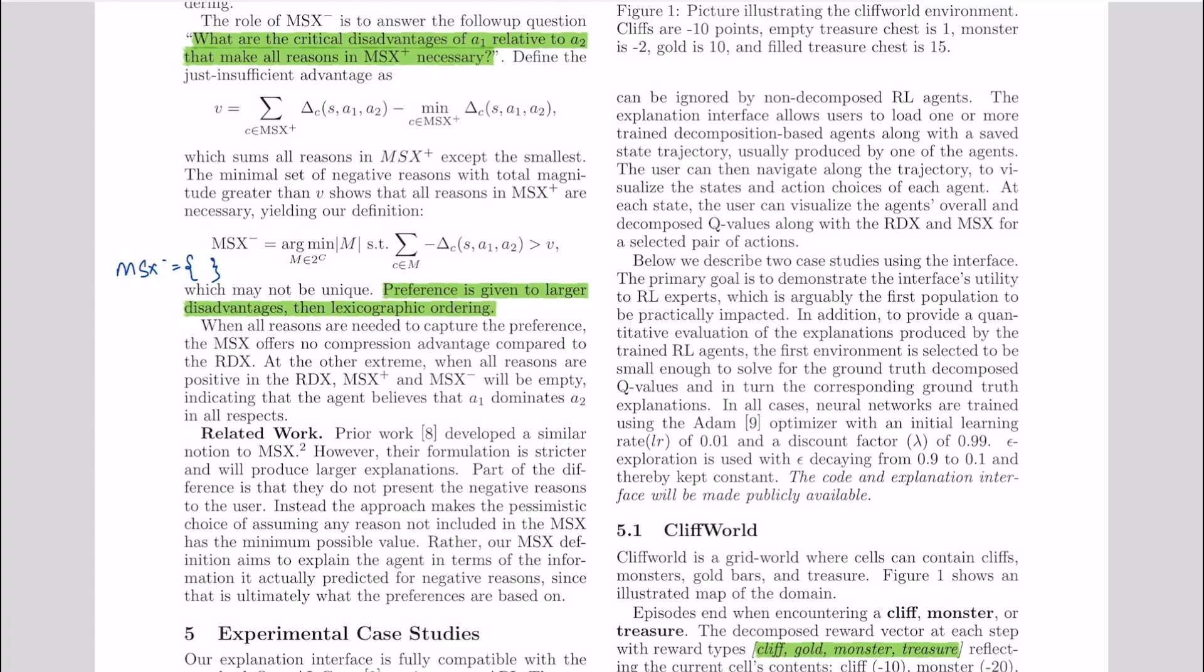On the other hand MSX minus answers the critical disadvantages of choosing A over B. So although A is the final choice by the agent, it can potentially have certain drawbacks too. We list out those critical drawbacks through MSX minus. Now to get that, what we do is we sum up all the MSX plus values and we have to find a value. Now sum of MSX plus values should barely cross the total disadvantage D.